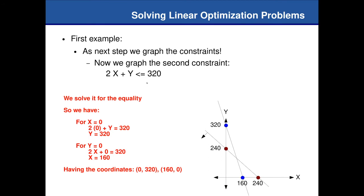We also have the second constraint: 2x + y ≤ 320. Setting it equal to 320, if y = 0 then x = 160, and if x = 0 then y = 320. Those two points let me plot the second constraint line. Again, testing (0, 0): 0 ≤ 320 is satisfied, so the feasible half-space is again below this line, indicated by an illustrative vector pointing downward.